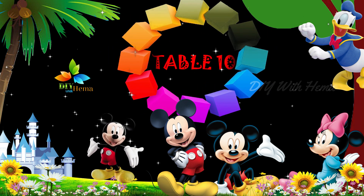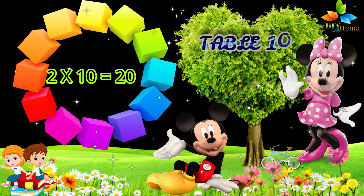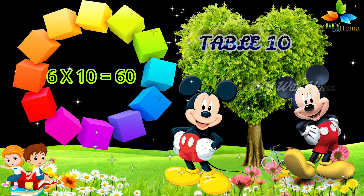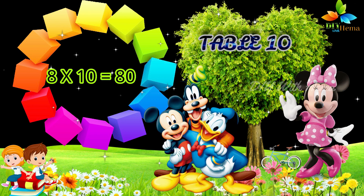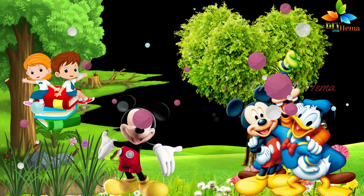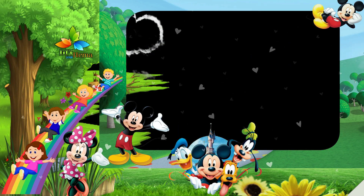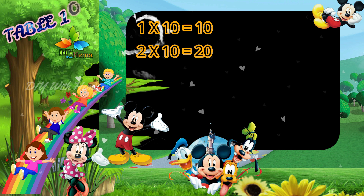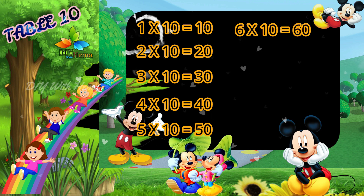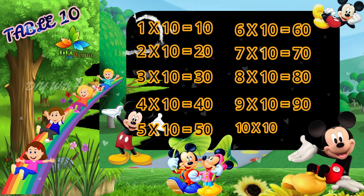Table ten. One ten is ten. Two tens are twenty. Three tens are thirty. Four tens are forty. Five tens are fifty. Six tens are sixty. Seven tens are seventy. Eight tens are eighty. Nine tens are ninety. Ten tens are one hundred.